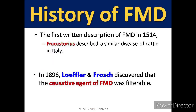History: In 1898, Loeffler and Frosch discovered that the causative agent of FMD was a filterable agent — this is the first animal virus to be identified. Previously, in 1514, Fracastorius from Italy described a similar type of disease in cattle.